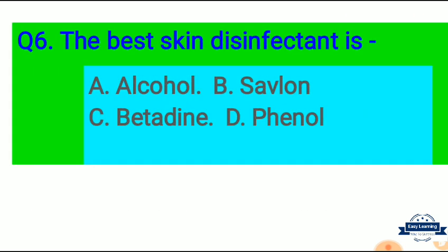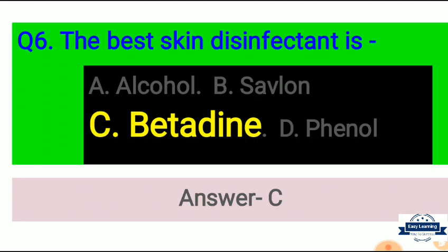Question 6: The best skin disinfectant is — Option A: Alcohol, Option B: Savlon, Option C: Betadine, Option D: Phenol. Correct answer is Option C, Betadine. Betadine is the best skin disinfectant.